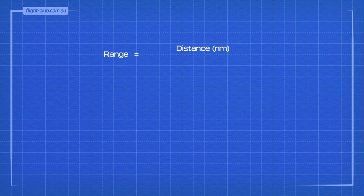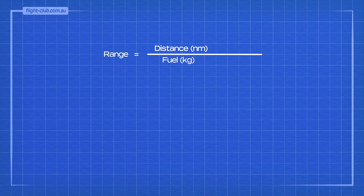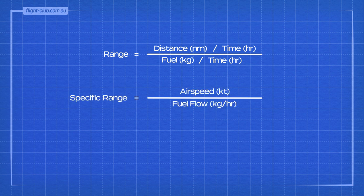Range can be represented by a simple formula: distance in nautical miles divided by fuel quantity available in kilograms. When we divide the top and bottom of this relationship by time, we obtain a new expression — this new expression is for specific range.